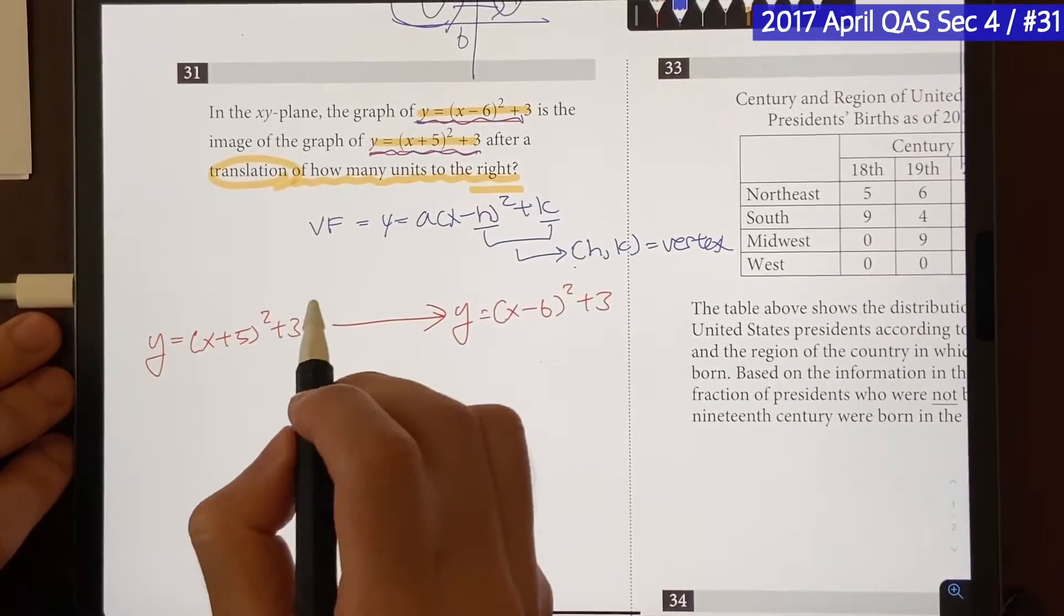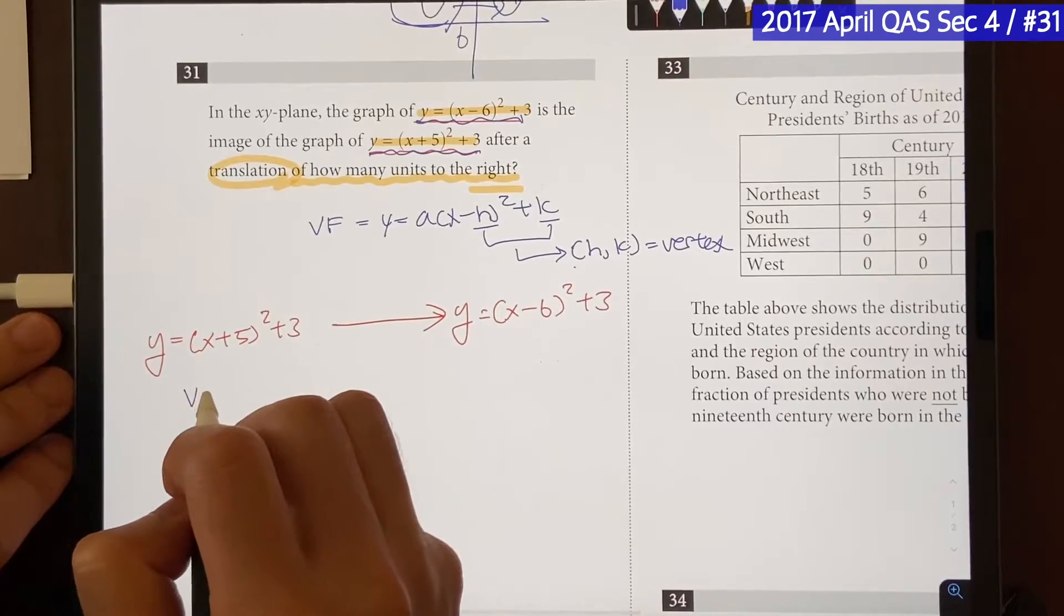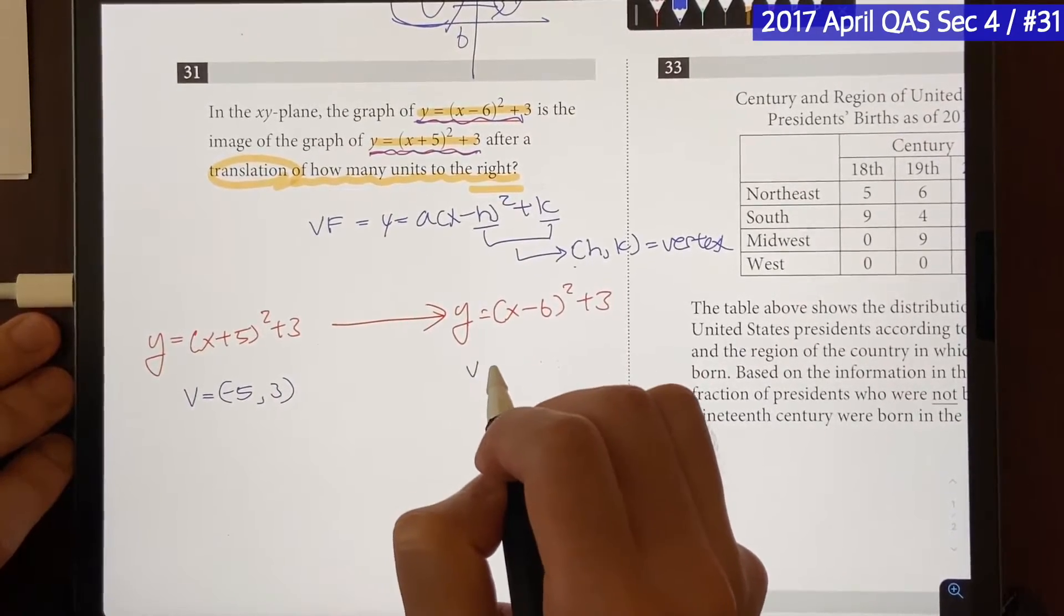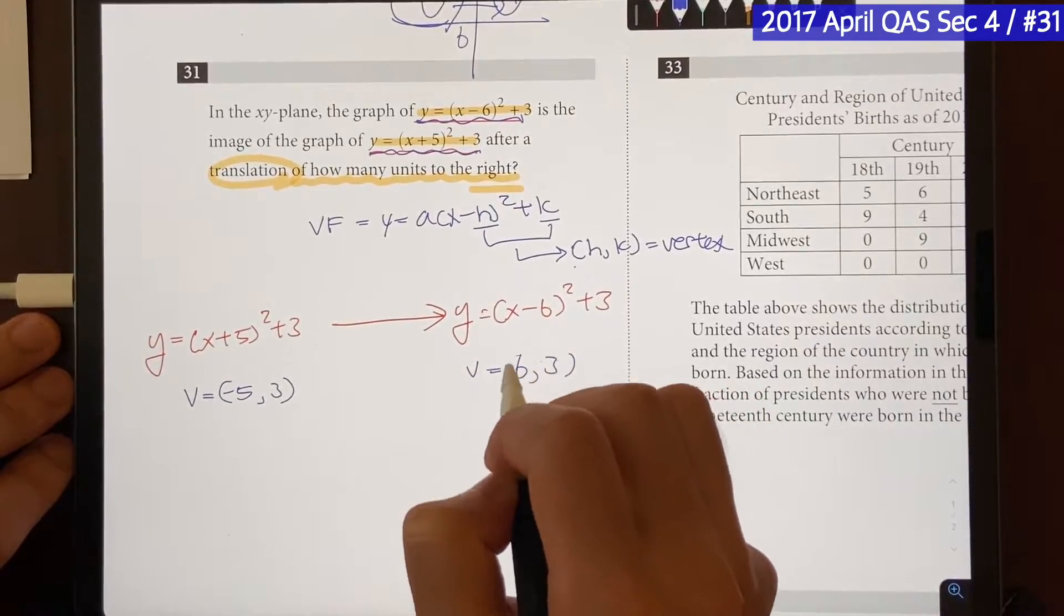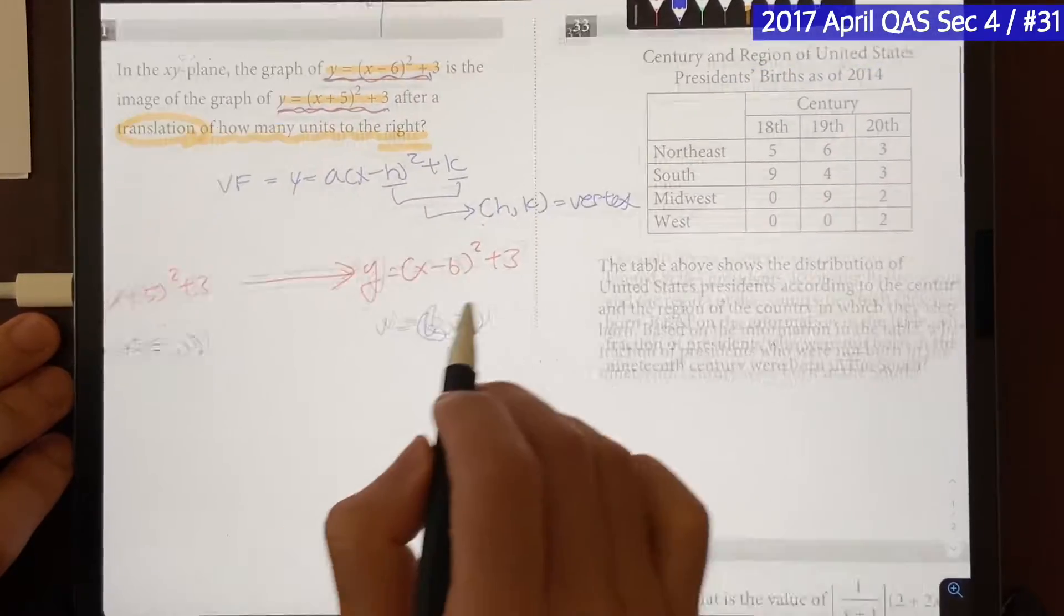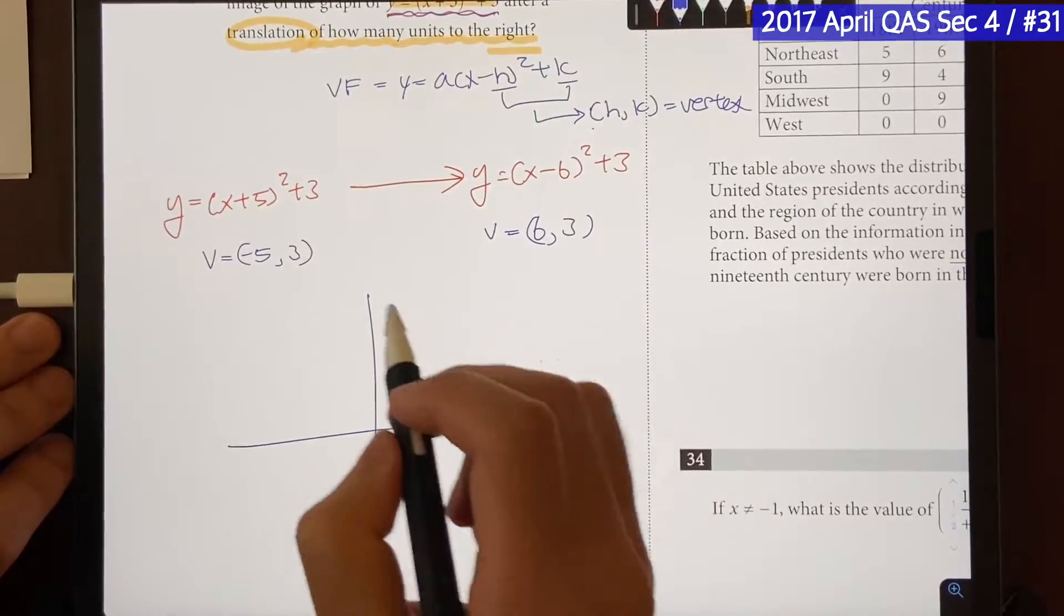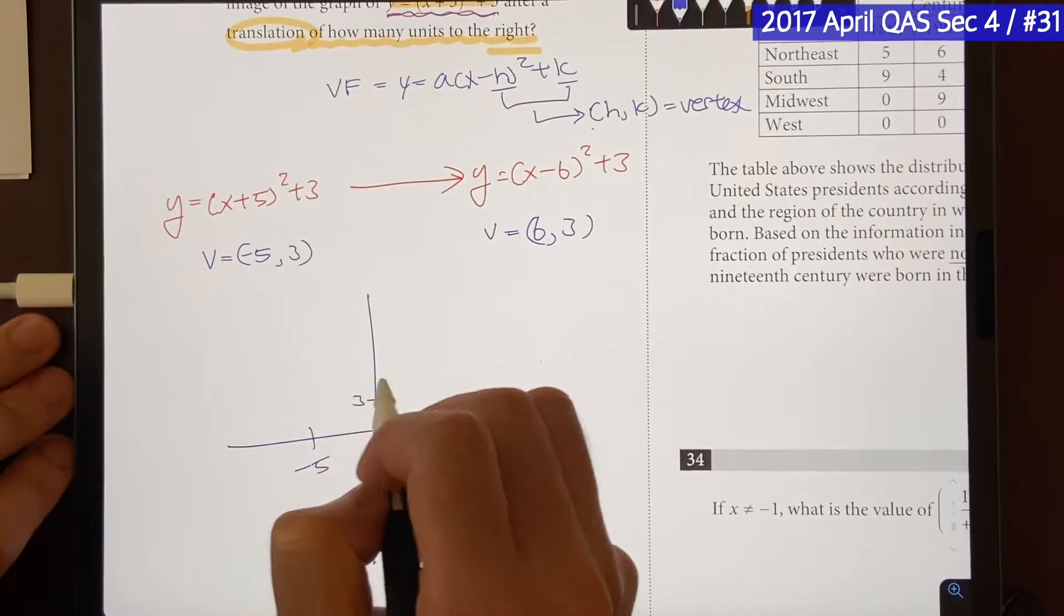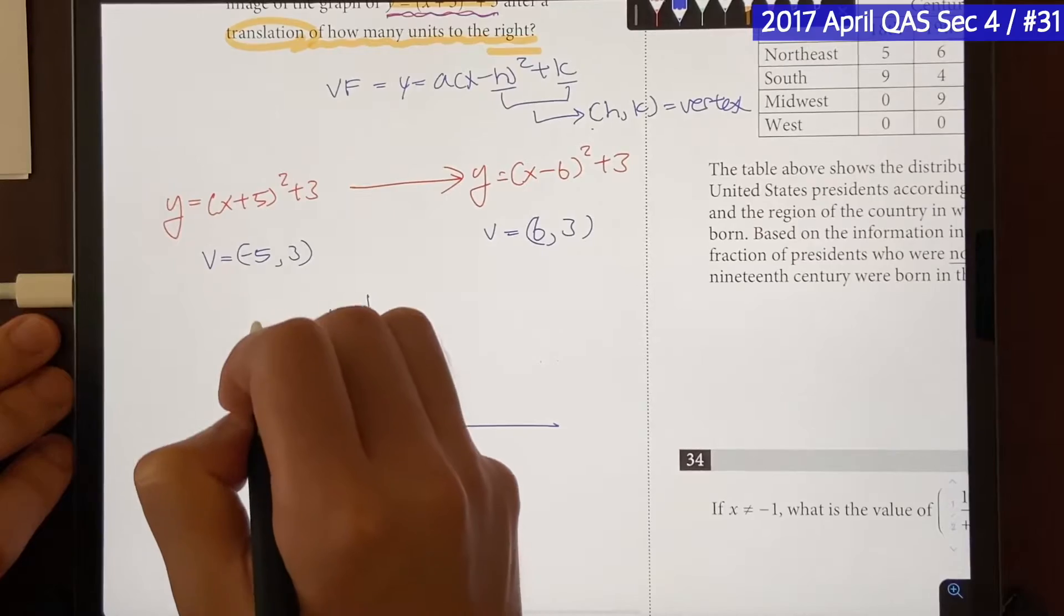That means for the first graph, the vertex will be located at minus 5 and positive 3. And the second one will have vertex located at positive 6 and positive 3. And if we were to roughly sketch out what these two graphs would look like, it would look something like this. Vertex is at minus 5 and 3, so it would be minus 5 here, positive 3 right there, like that, and it will be facing upward.